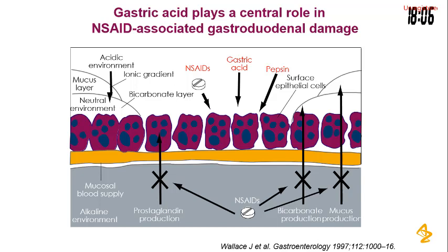NSAIDs affect the gastric and duodenal cells that produce bicarbonate. NSAIDs inhibit prostaglandins that help regeneration of cells, inhibit bicarbonate secretion, and inhibit mucus secretion. This means the mucosa will be exposed to acid, which causes damage, and pepsin will further increase the damage and make deep ulcerations.